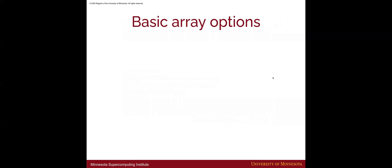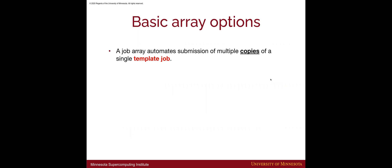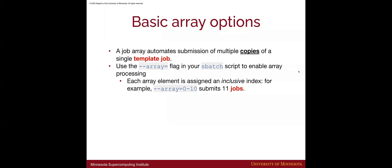Let's talk about some basic array options using a sample script. A job array will automate submissions to SLURM of multiple copies of a single template job — you edit one template and SLURM creates and submits multiple jobs for you. To do this, you use the flag called 'array' within your sbatch script. Each array element is assigned an integer index. For instance, the flag 'array=0-10' will submit 11 jobs numbered 0 through 10 inclusively. This does not have to be sequential — you can separate ranges with commas, for example '0-5,8-10'.